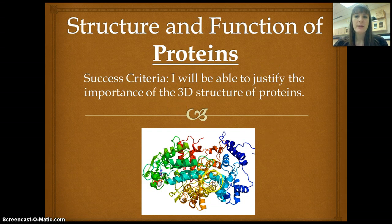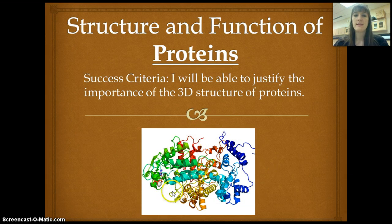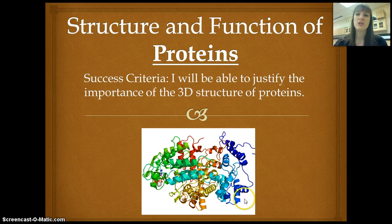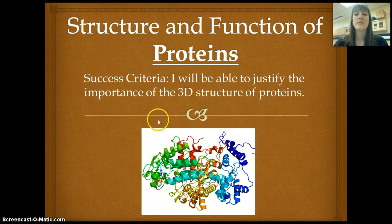First I'm going to talk a tiny bit about this image down here. There are lots of ways to represent the very complicated structures of proteins. This one is done with a ribbon model. The different colors are supposed to represent different aspects of this protein. The other thing I notice is that there are all these little spirals, called alpha helices, and they're part of the secondary structure of proteins. Keep this kind of image in the back of your mind as we talk more about proteins.